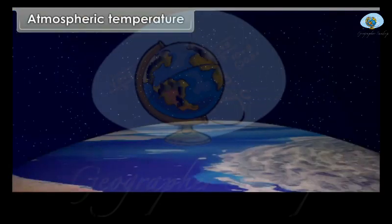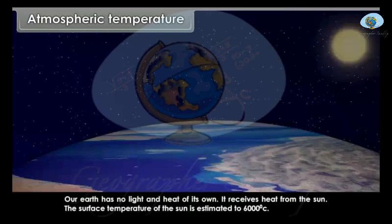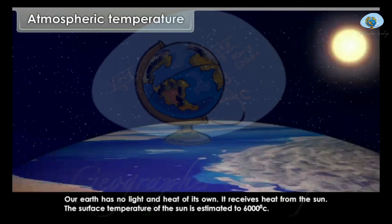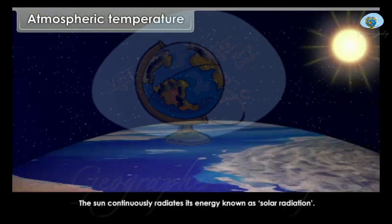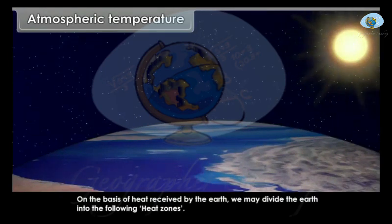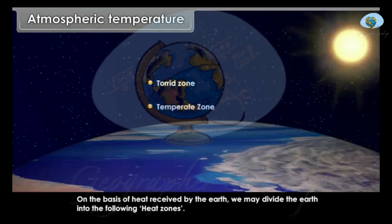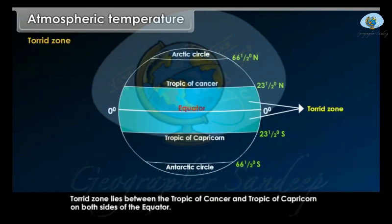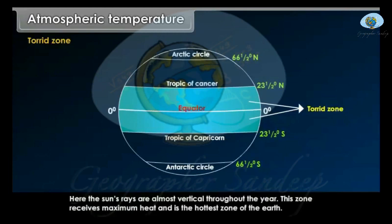Atmospheric Temperature. Our earth has no light and heat of its own — it receives heat from the sun. The surface temperature of the sun is estimated to be 6000 degrees Celsius. The sun continuously radiates its energy, known as solar radiation. On the basis of heat received by the earth, we divide the earth into the following heat zones: the Torrid Zone, the Temperate Zone, and the Frigid Zone. The Torrid Zone lies between the Tropic of Cancer and Tropic of Capricorn on both sides of the equator. Here, the sun's rays are almost vertical throughout the year. This zone receives maximum heat and is the hottest zone of the earth.